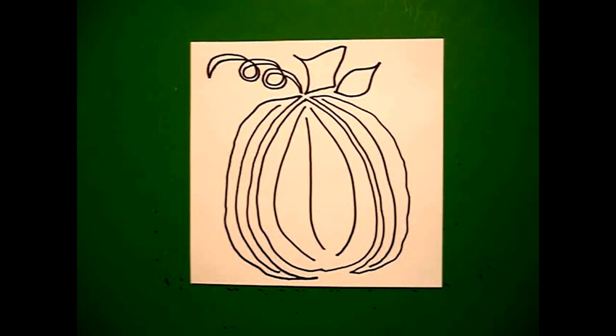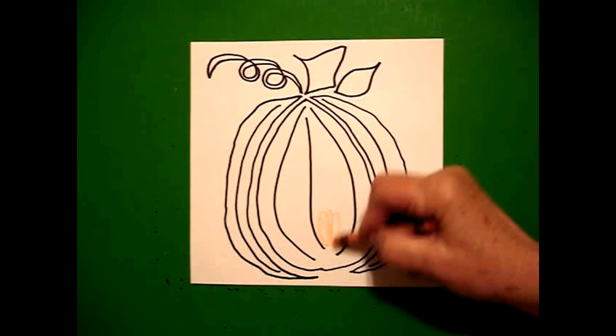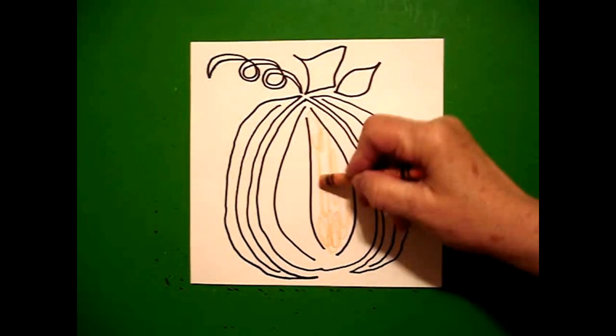Now, we're going to color it in. Let's see how we do this. Okay, I found three different oranges. I'm going to start first with my yellow-orange, and I'm just going to color the inside section yellow-orange.